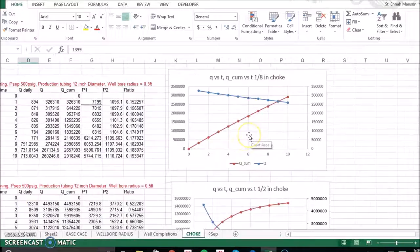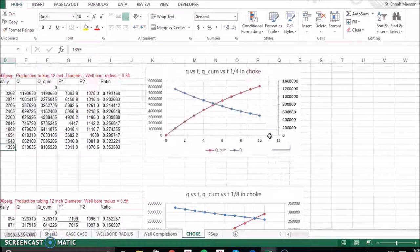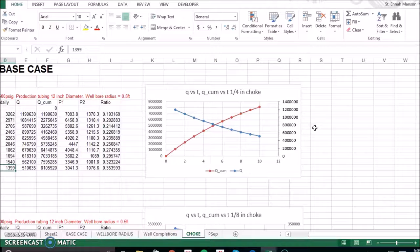Here are the three graphs for each choke. Here's a half an inch, an eighth of an inch, and a fourth of an inch. And these graphs show us 10 years of production and the flow rate.